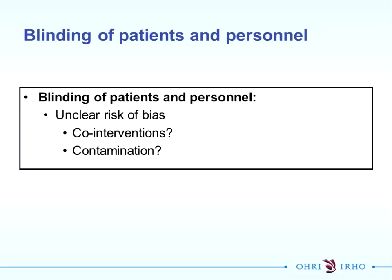Although there is a statement in the methods section stipulating that participants were telephoned to ensure they weren't doing exercise, this hasn't been reported in the results, so we don't actually know whether people took up exercise. We thought this was somewhat unclear in terms of co-interventions and contamination. If you thought it was low or high risk of bias for whatever reason, as long as you report your judgement and rationale, this is all we can do. It's a fairly subjective process, and that's why we do it in pairs and try to come to consensus.